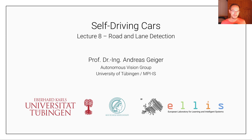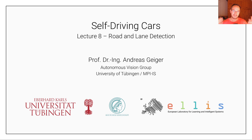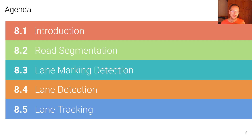Hey, and welcome to self-driving cars lecture number eight on road and lane detection. Last time we've seen how we can build maps and also utilize maps for localization, in order to plan the path of a vehicle. But of course there's a lot of information available locally that can be sensed through the sensors of the vehicle, and that's what we are going to talk about today, also with the goal of planning a local path.